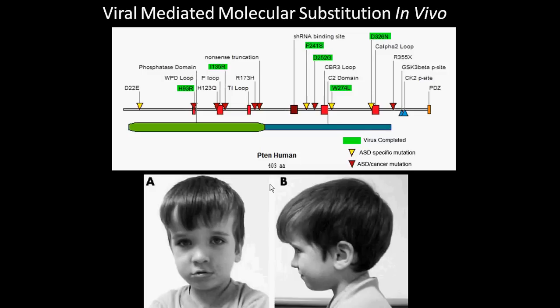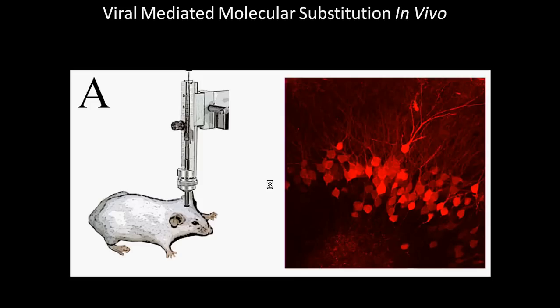To try to bridge this gap between our understanding of neuronal function and emergent abilities, we are introducing mutations that have been identified in human autism patients into the mouse brain. To do this, we inject viruses into the mouse brain to mimic the genetic defects found in human autism patients — we are using viruses as a tool to make genetic changes in the neurons of the mice. Shown here, we are injecting a virus into the brain of a living mouse, and this virus results in the expression of a fluorescent protein called M-Cherry in sections of this mouse brain.